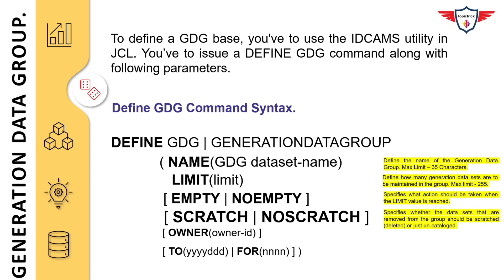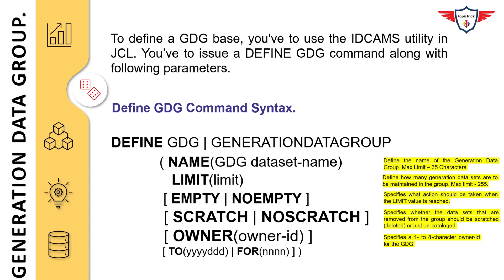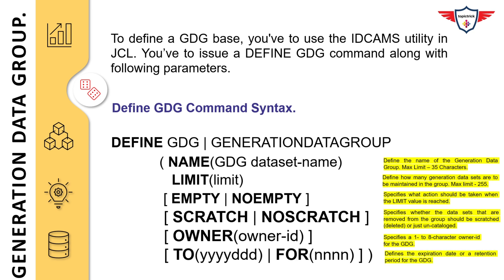NOEMPTY means the oldest generation is removed from the group when a new generation is added, while SCRATCH means the removed data set is actually deleted from the volume. In contrast, EMPTY means all previous generations are removed when a new generation is added, while NOSCRATCH means a removed data set is uncatalogued but not deleted. The OWNER parameter specifies the owner ID for the generation data group. TO and FOR are used to define the expiration date or retention period for a GDG base.